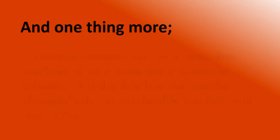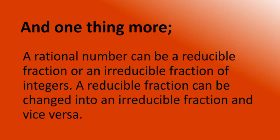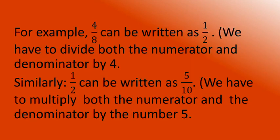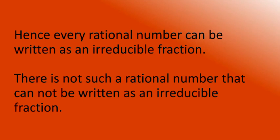One thing more: a rational number can be a reducible fraction or an irreducible fraction of integers. A reducible fraction can be changed into an irreducible fraction and vice versa. For example, 4/8 can be written as 1/2 by dividing both numerator and denominator by 4. Similarly, 1/2 can be written as 5/10 by multiplying both numerator and denominator by 5.